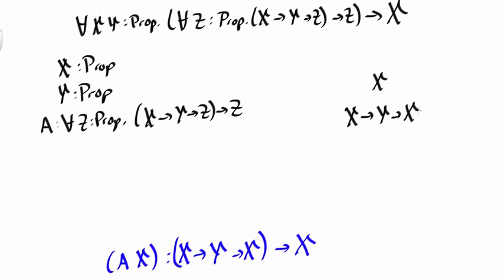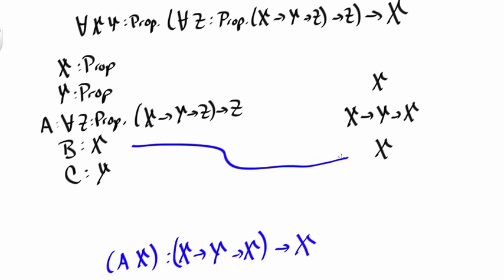To prove this we introduce two new assumptions: b, a proof of x, and c, a proof of y. We need to prove x, and now we're done because we have a proof of x — namely b is a proof of x.